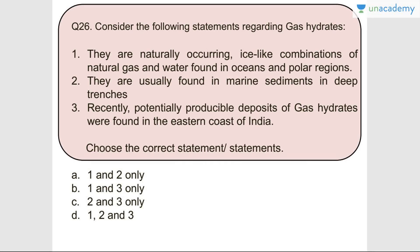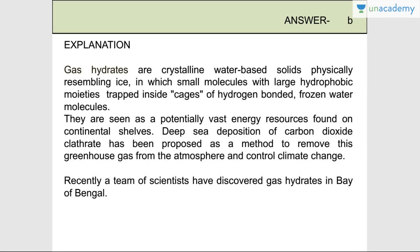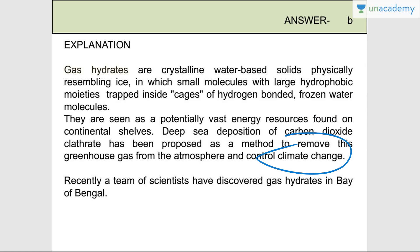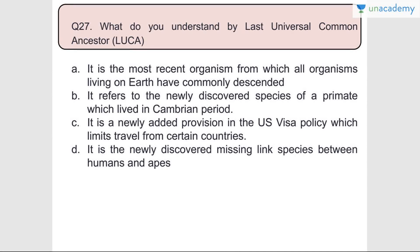Question number twenty-six: Consider the following statements regarding gas hydrates. Statement one - they are naturally occurring ice-like combinations of natural gas and water found in oceans and polar regions - correct. Statement two - they are usually found in marine sediments and deep trenches - wrong. Statement three - potentially producible deposits of gas hydrates are found on the eastern coast of India - correct. Answer is B, one and three. Gas hydrates are crystalline water-based solids resembling ice, with small molecules trapped inside cages of hydrogen-bonded frozen water molecules. Recently, scientists discovered gas hydrates in the Bay of Bengal.